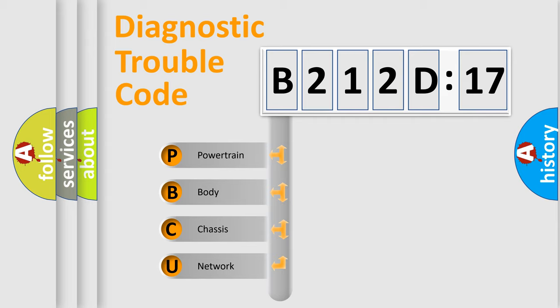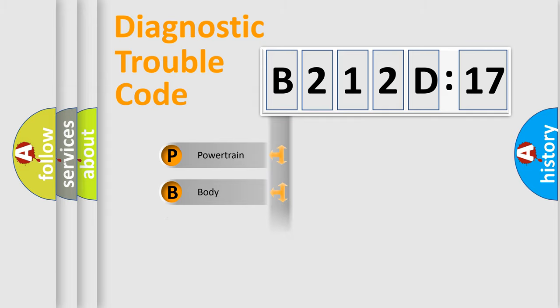We divide the electric system of automobile into four basic units: Powertrain, Body, Chassis, and Network.